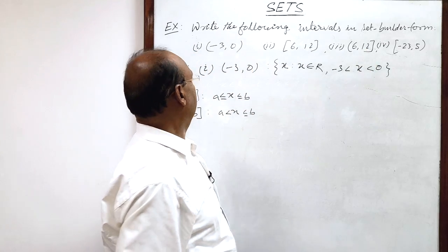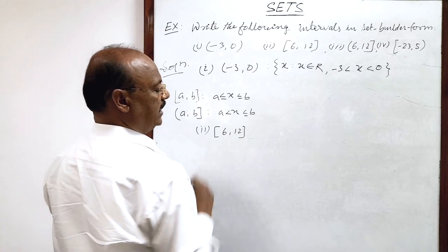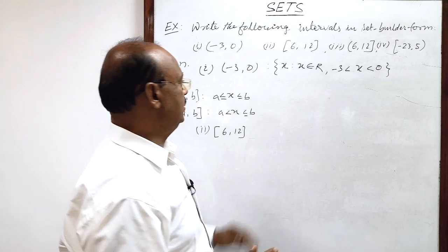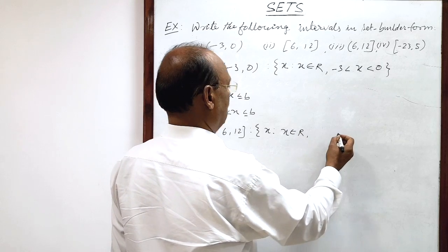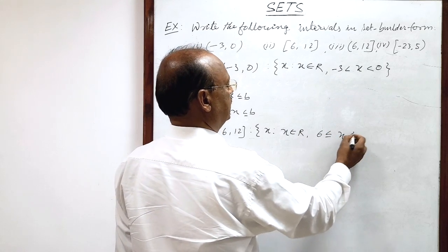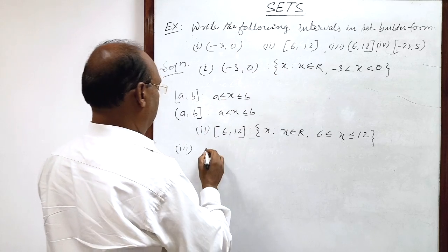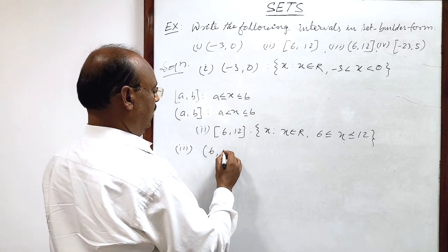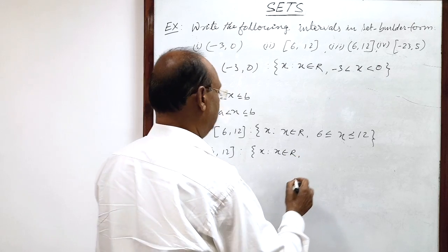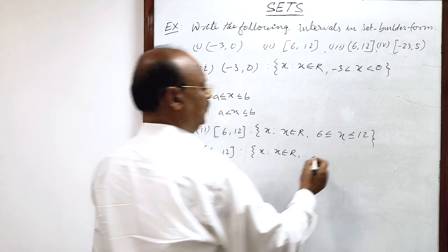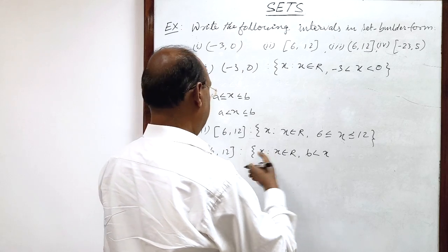Similarly, let us see the second part: 6 and 12, both sides closed. The left side interval is open, so x is greater than 6 — we are not using the sign of equality. But the right side is closed, so we will use the equality sign also: less than or equal to 12.